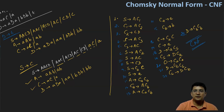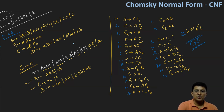So we have converted this CFG to a simplified version in Chomsky normal form. Chomsky normal form is used because it makes derivations easier. So thanks for watching this video. We will take another example related to Chomsky normal form in the next lecture.